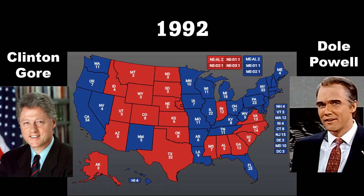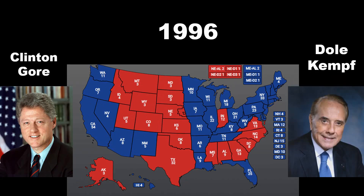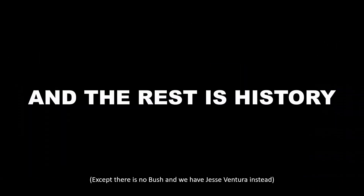In 1992, America is in a new world order. The Soviet Union has collapsed, and with more domestic issues being on the table, Bill Clinton and Al Gore defeat Bob Dole and Colin Powell. This happens again in 1996. This time, Dole is running with Jack Kemp, a representative from New York, as his running mate. And the rest is history.